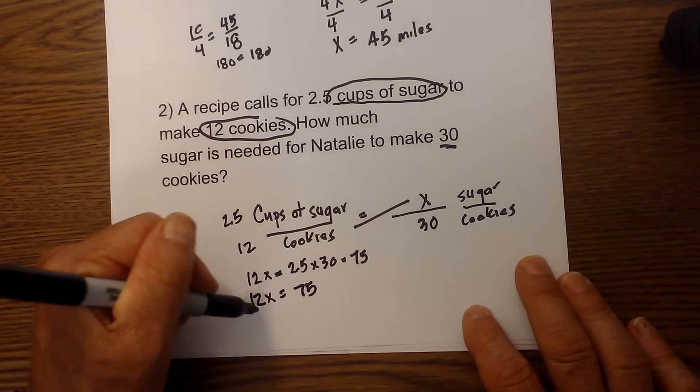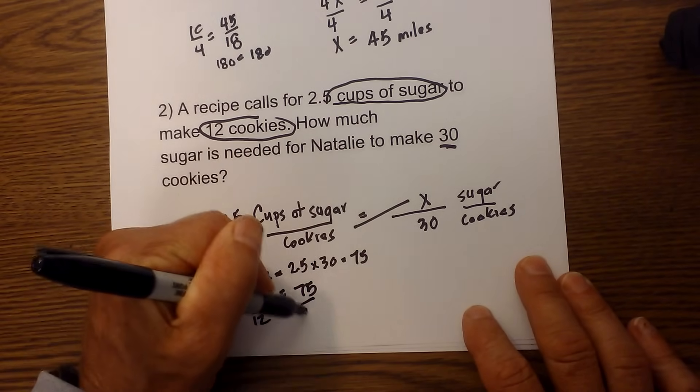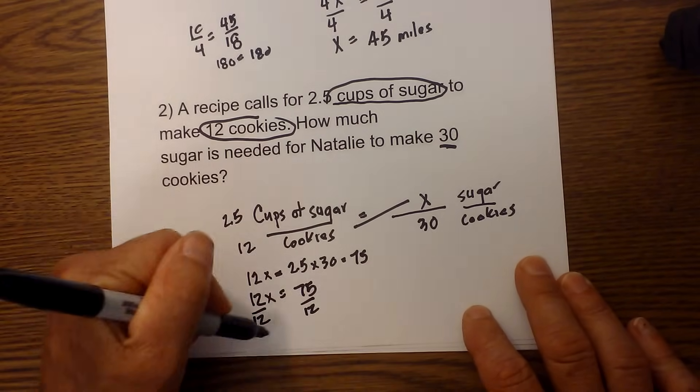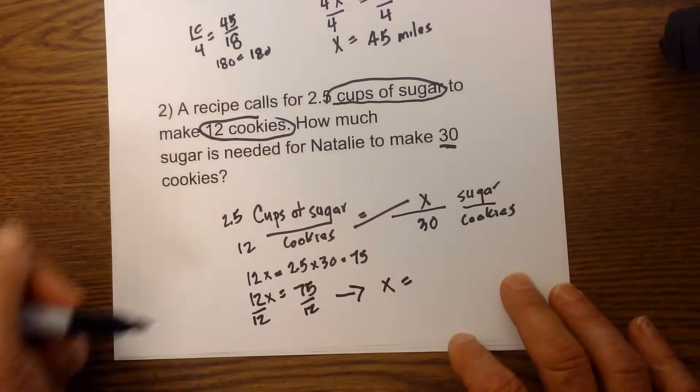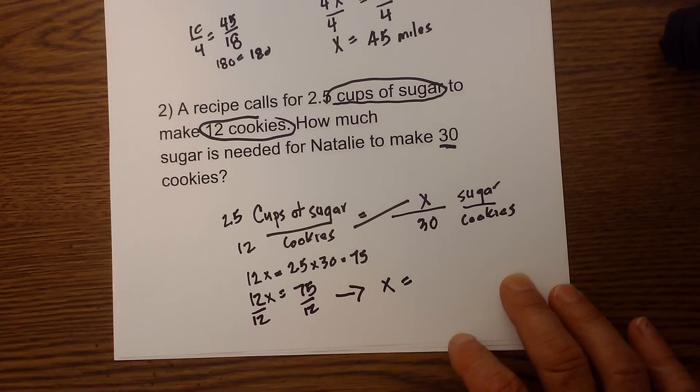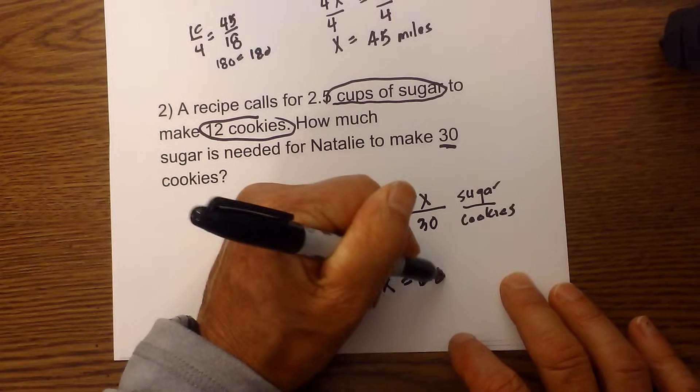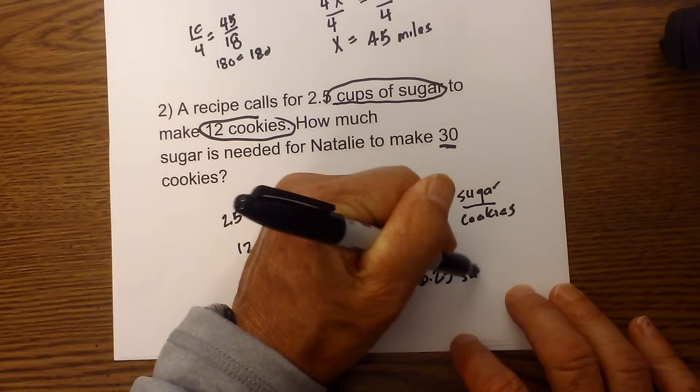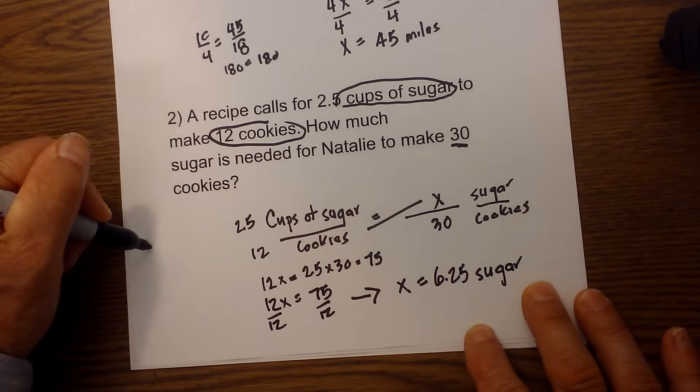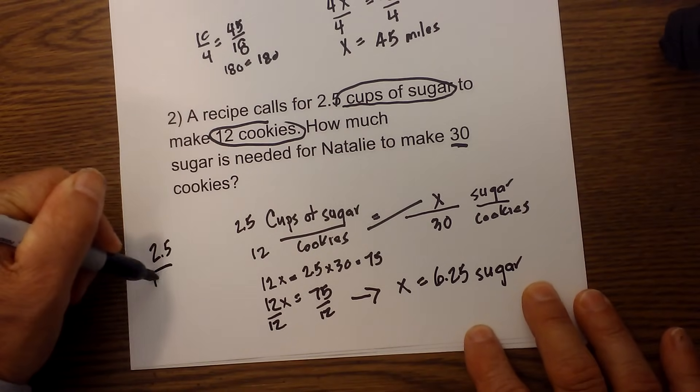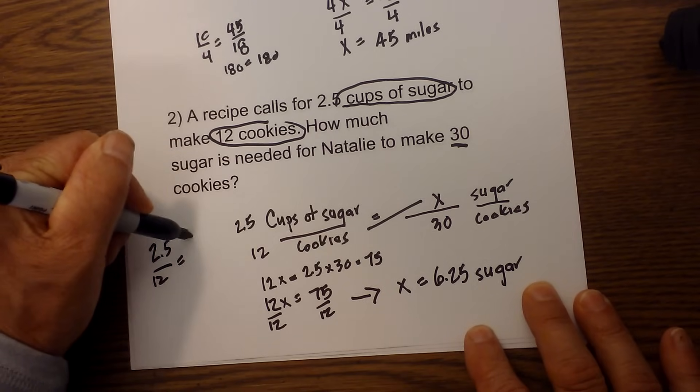Divided by 12—all I do is divide each side by 12. So X is equal to 75 divided by 12, and 75 divided by 12 is 6.25 cups of sugar.